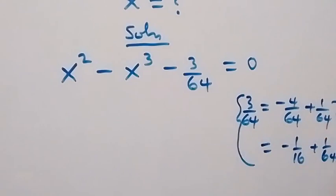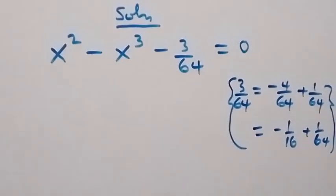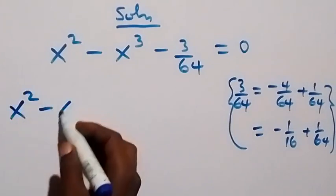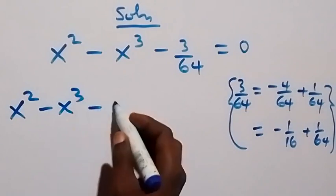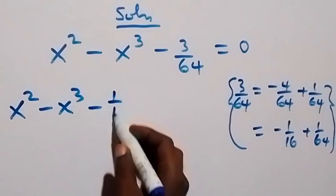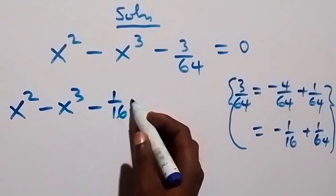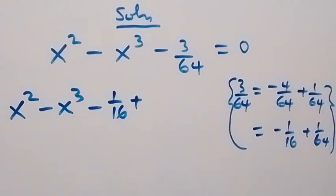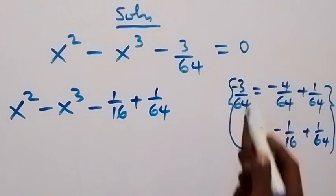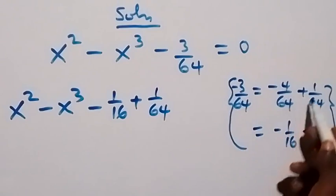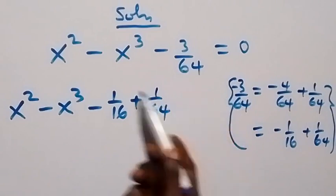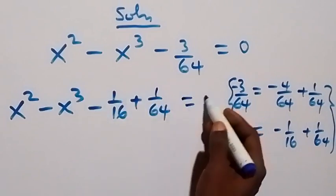So now when we make this substitution here, what we have becomes x squared minus x cubed, then minus 1 over 16 then plus 1 over 64. So here minus 3 over 64 is written as minus 4 over 64 plus 1 over 64, and we have substituted it as this, which equals to zero.